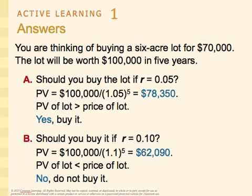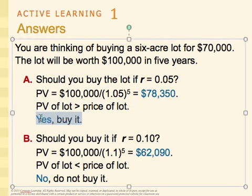You're thinking about buying a 6-acre lot for $70,000, and the lot will be worth $100,000 in five years. In scenario A, should you buy the lot if the interest rate is 5%? The present value of the lot is $100,000 divided by (1 + 0.05) raised to the power of 5, with N = 5. The present value is $78,350. Since the present value of the lot is greater than the price you pay now, yes, buy it. You will make about $8,300 in real terms in five years — it's not the $30,000 you think you were making.